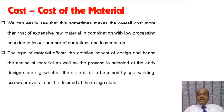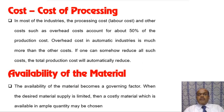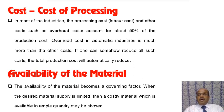The type of material affects the design details — for example, whether the material is to be joined by spot welding, screws, or rivets must be decided at the design stage. Availability of material is a governing factor in selection; if the supply of a desired material is limited, a costlier material may need to be ordered in ample quantity.